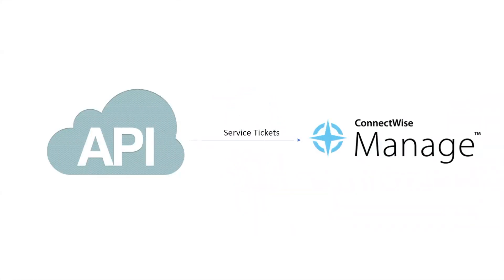For this demo we're going to be looking at the creation of service tickets in ConnectWise Manage through data received from our enterprise API. By the end of the demo you should be comfortable with our branded ConnectWise Manage connector as well as how to set up API endpoints for workflows in the Flowgear environment.